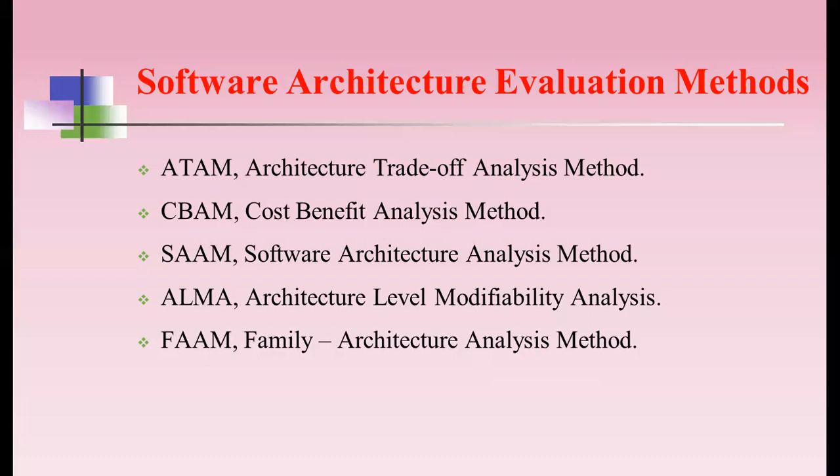SAAM — Software Architecture Analysis Method — has the main objective of architecture suitability and risk analysis. It uses six activity steps carried out in parallel with no preparation activities. The scenarios used in SAAM are direct and indirect scenarios, and the classification counts the number of components affected by the scenarios. The approach in SAAM is scenario elicitation via brainstorming with stakeholders, and mapping scenarios onto the architecture to verify functionality or estimate change costs.